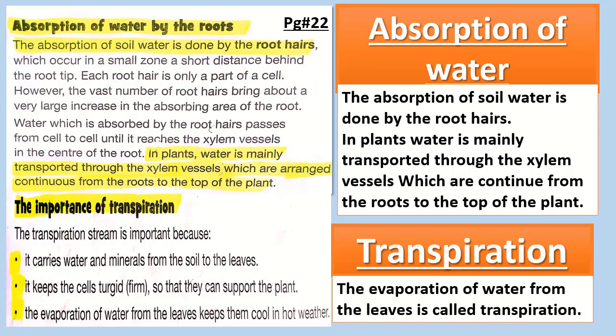Open your page number 22. Here the topic is absorption of water. The absorption of soil water is done by the root hairs. In plants, water is mainly transported through the xylem vessels, which are continued from the roots to the top of the plant. The next topic is transpiration. The evaporation of water from the leaves is called transpiration. The transpiration stream is important because it carries water and minerals from the soil to the leaves, keeps the cells firm so they can support the plant, and the evaporation of water from the leaves keeps them cool in hot weather.